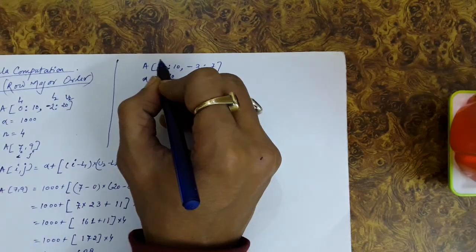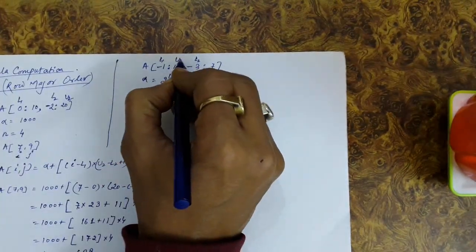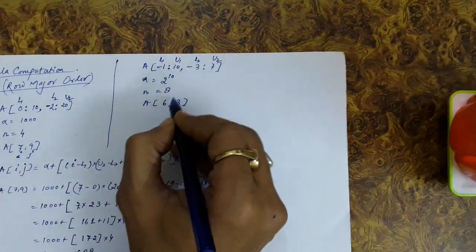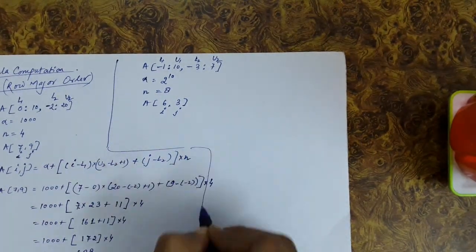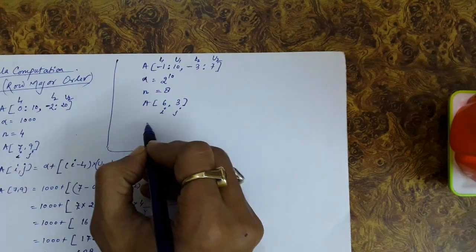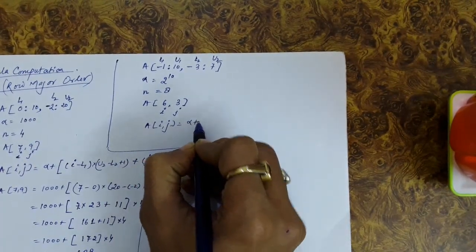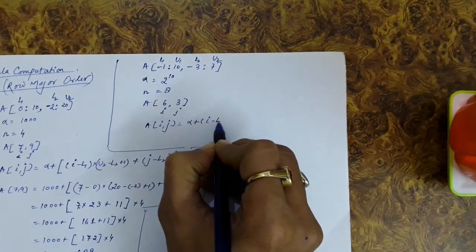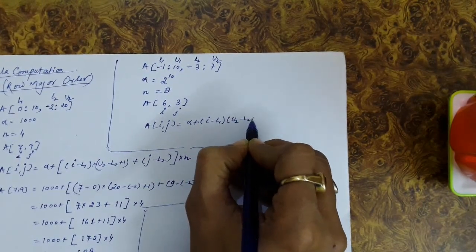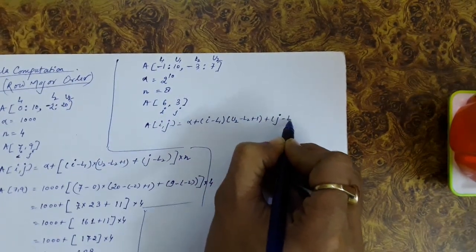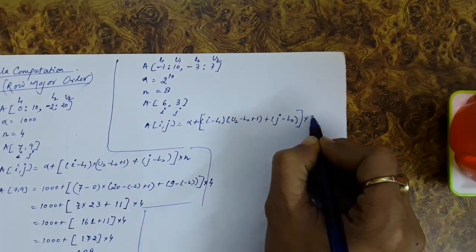Here l1 is minus 1, l2 is minus 3, u1 is 10, u2 is 7, i is 6 and j is 3. We are interested in finding the address of element a[6][3]. The address of element a[i][j] is given by the formula: alpha plus (i minus l1) multiplied by (u2 minus l2 plus 1) plus (j minus l2), the whole quantity multiplied by n.